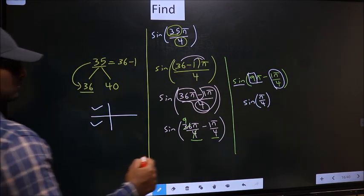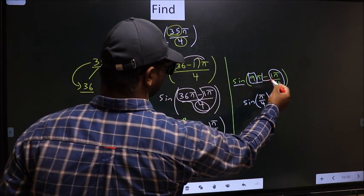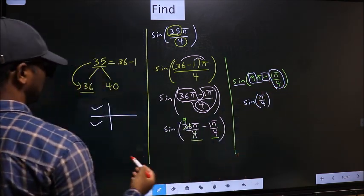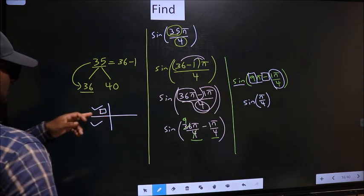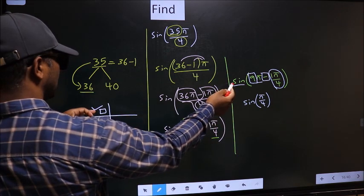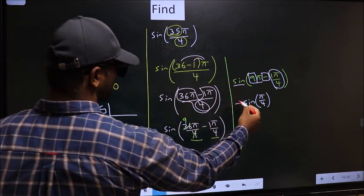Now to check in which quadrant does it lie, we should look at this symbol. Here we have negative. That means the angle lies in the second quadrant. And in the second quadrant, sin is positive. So you should put plus.